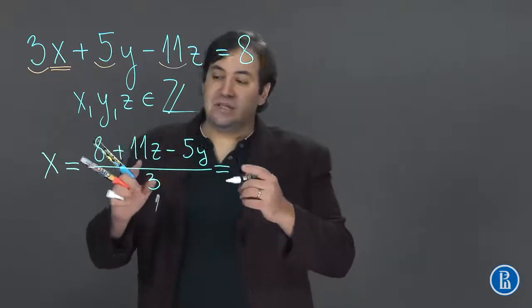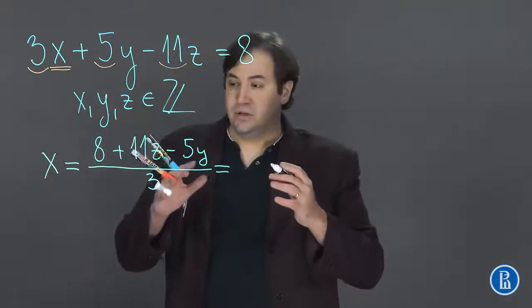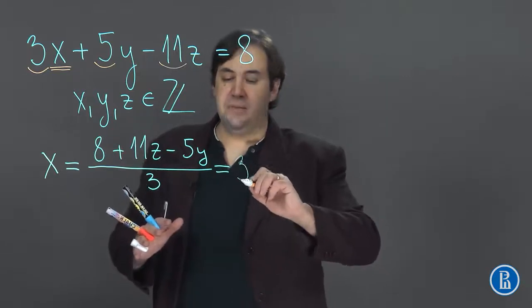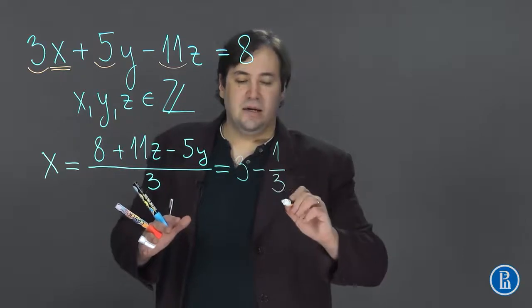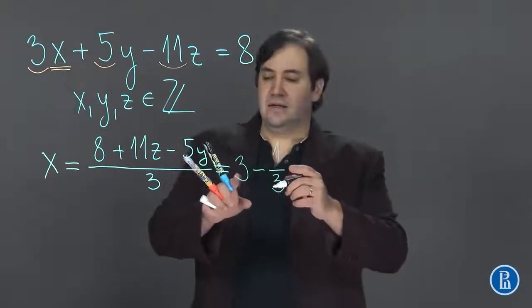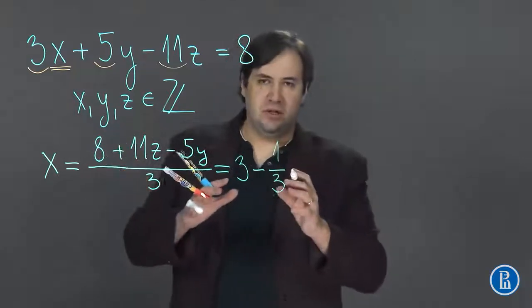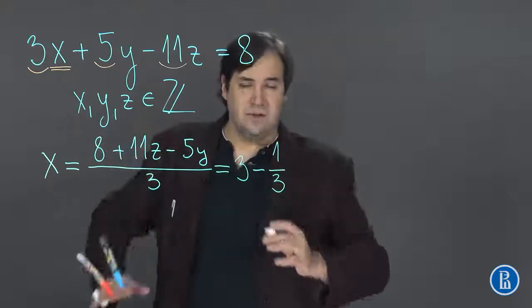But we can also say that 8 divided by 3 is almost equal to 3. So let's write 3 minus 1 over 3. We did this in order for this number to be the smallest possible. It will shorten the solution of the equation.